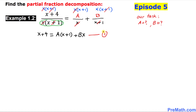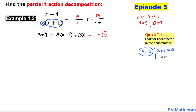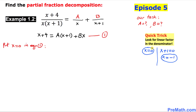I am going to call this Equation 1. Now, in our next step, we use a quick trick: look for the linear factors in the denominator. We have two linear factors — x and x plus 1. I am going to set them equal to zero. The first gives x equal to zero, and the second gives x equal to negative 1.